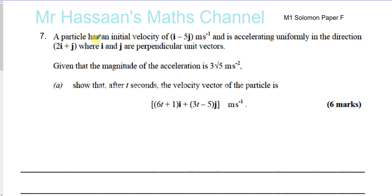A particle has an initial velocity of i minus 5j meters per second and is accelerating uniformly in the direction 2i plus j, where i and j are perpendicular unit vectors. Given that the magnitude of the acceleration is 3 root 5 meters per second squared, show that after t seconds the velocity vector of the particle is given by (6t + 1)i plus (3t minus 5)j meters per second.